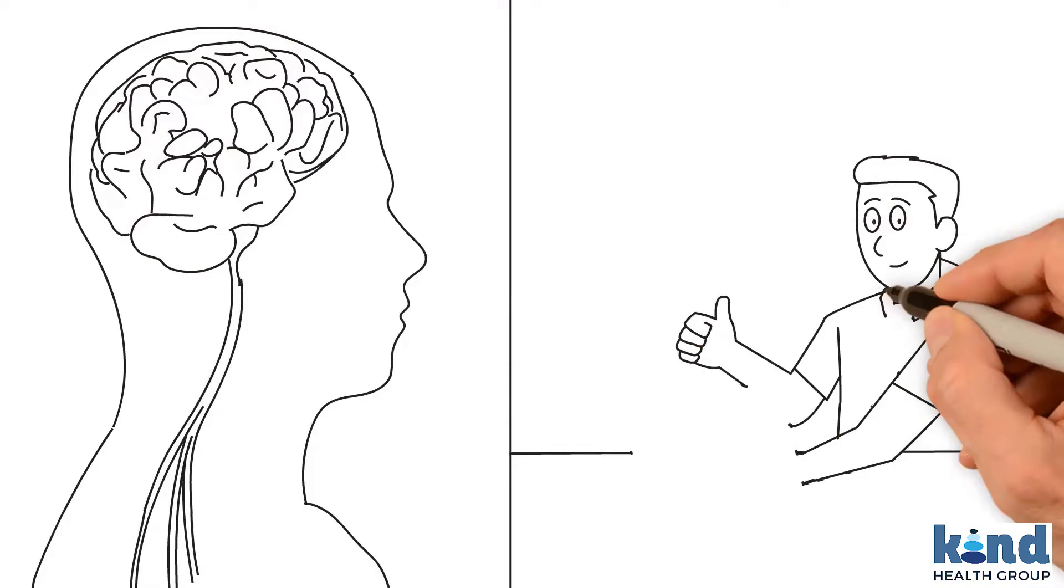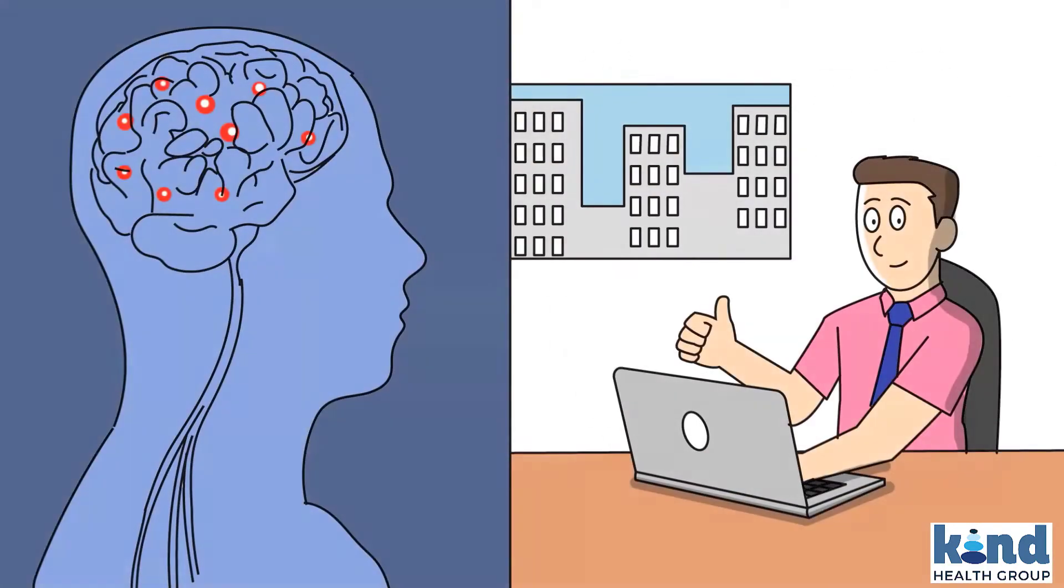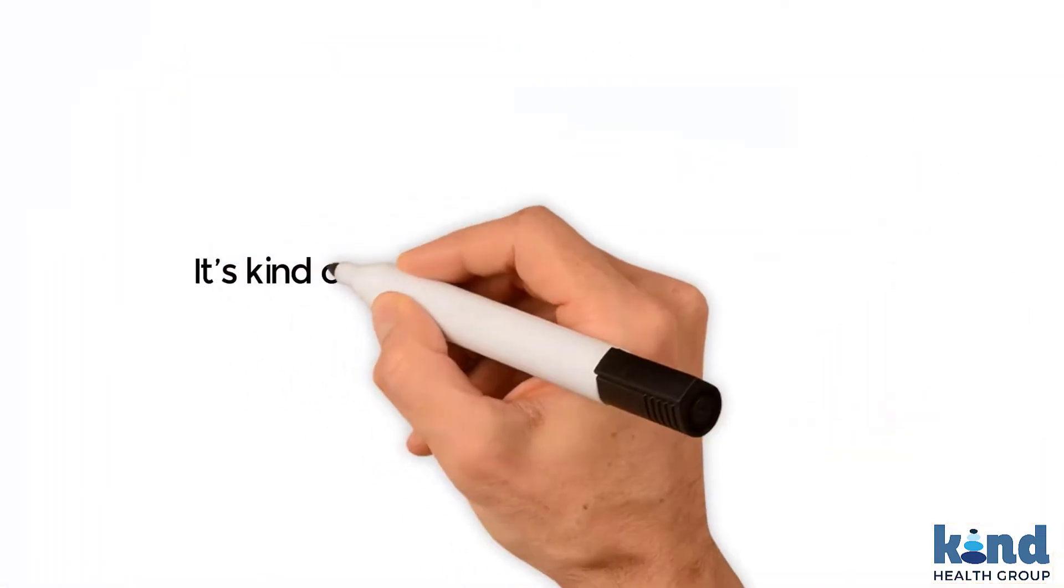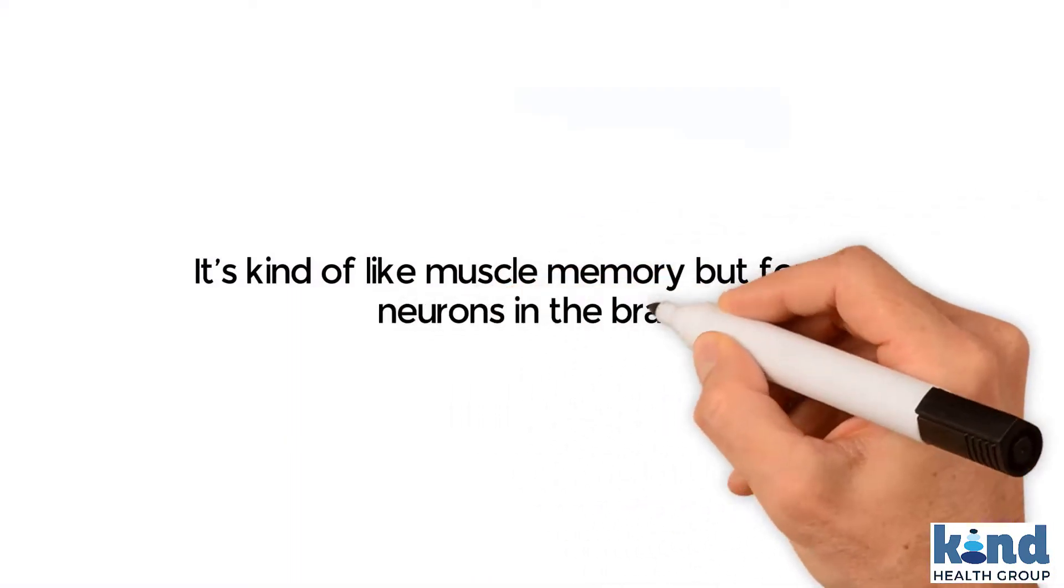The more our brain practices certain pathways, the better it gets at doing whatever it is that we practice. It's kind of like muscle memory but for the neurons in the brain.